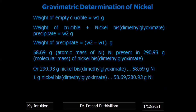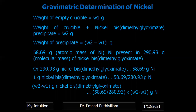Therefore, 1 gram of nickel bis dimethylglyoximate precipitate gives 58.69 divided by 290.93 gram of nickel. And we have W2 minus W1 gram. Therefore, W2 minus W1 gram of nickel bis dimethylglyoximate gives 58.69 divided by 290.93 multiplied by (W2 minus W1) gram of nickel.